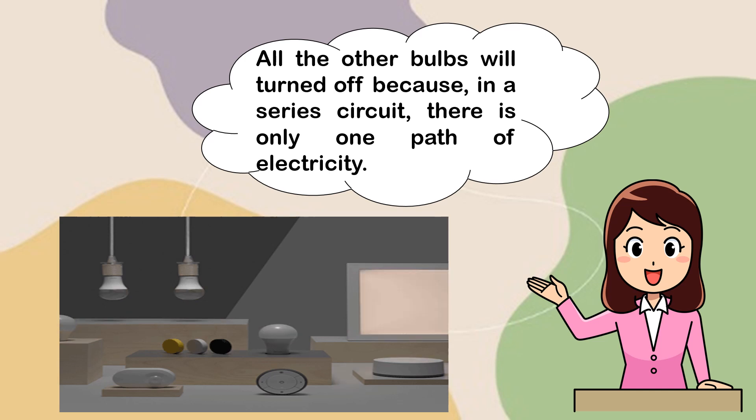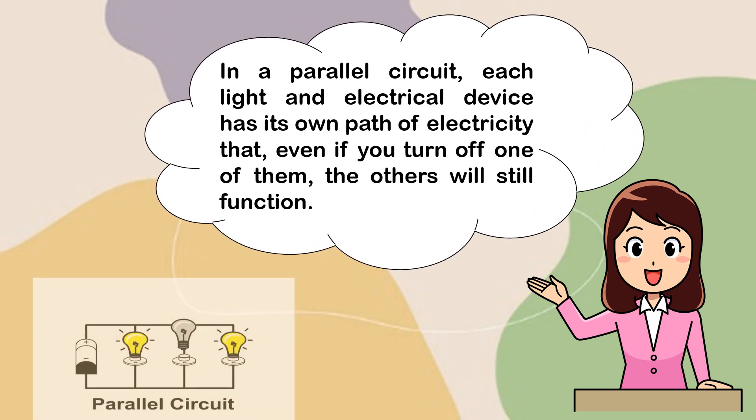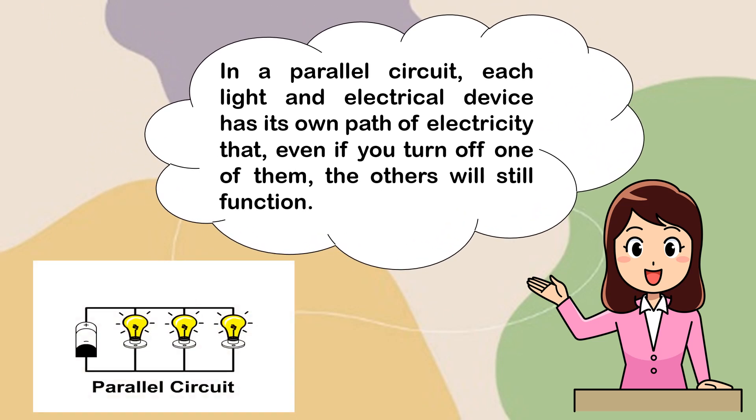So, the most appropriate circuit for homes is the parallel circuit. In a parallel circuit, each light and electrical device has its own path of electricity that even if you turn off one of them, the others will still function.